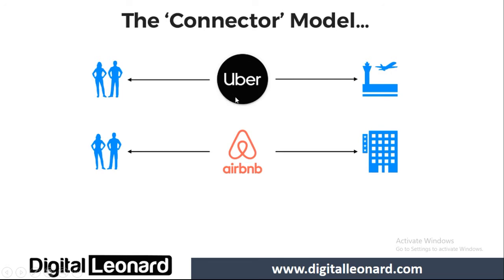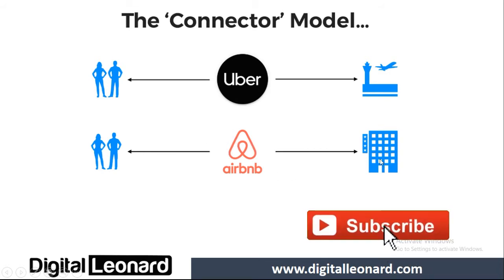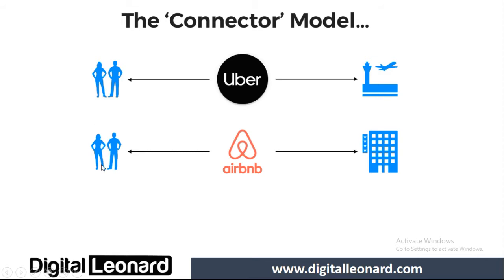Uber is one of the biggest taxi companies in the world that owns no taxi of its own. The same thing applies to Airbnb. What does Airbnb do? Airbnb connects house owners with those in need of accommodation. If someone is traveling into Abuja, Nigeria, and needs somewhere to stay, Airbnb says 'we can connect you with a reliable and good-looking house.' They get options and are connected to house owners.